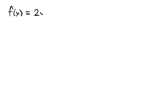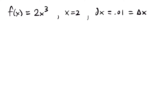Let's take the function f of x equals 2x cubed, and look at the specific value of x equals 2 and dx equals 0.01. It's important to notice that dx is also the change in x, so this is equal to delta x. Unlike dy and delta y, which are approximately equal to each other, dx and delta x are exactly the same value. Remember that delta y equals f of x plus delta x minus f of x.